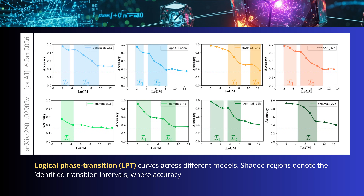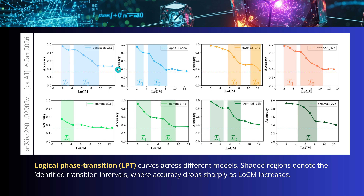Across different models — DeepSeek v3, GPT-4.1 nano, Qwen 2.5 14B, 32B, Gemma 1B, 4B, 12B, 27B — the shaded areas denote the identified transition intervals where accuracy drops from a stable plateau into another region. There are regions of instability in the reasoning process, then stability, then instability again, depending on the number of trainable parameters. The dashed line marks where the model is simply guessing — no reasoning anymore. That is where reasoning stops.